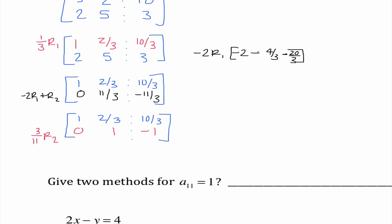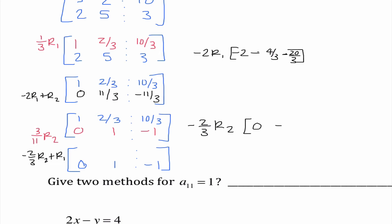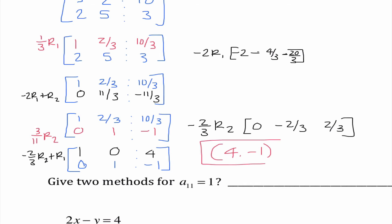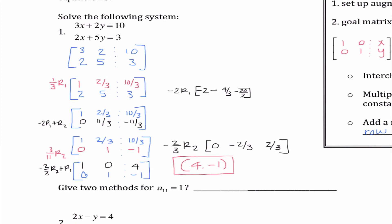Moving to column 2, I want to transform 11/3 into a 1 by multiplying by 3/11, the reciprocal. Row 1 stays the same. Distributing 3/11 gives 0, 1, negative 1. Now I need to make 2/3 into a 0, so I do negative 2/3 times row 2 plus row 1. Off to the side: 0, negative 2/3, positive 2/3. Adding: 1, 0, 4. So the solution is the ordered pair (4, negative 1). Checking: 12 minus 2 is 10 ✓, 8 minus 5 is 3 ✓.